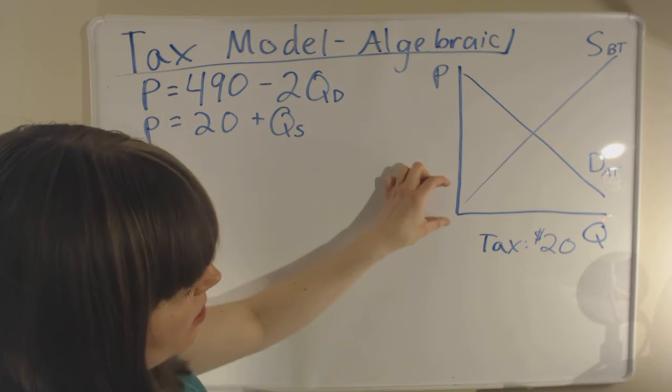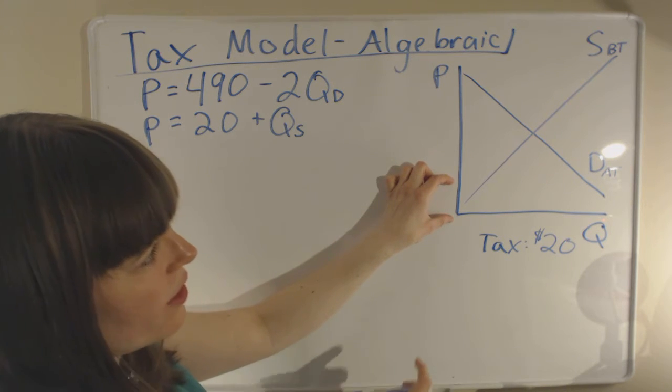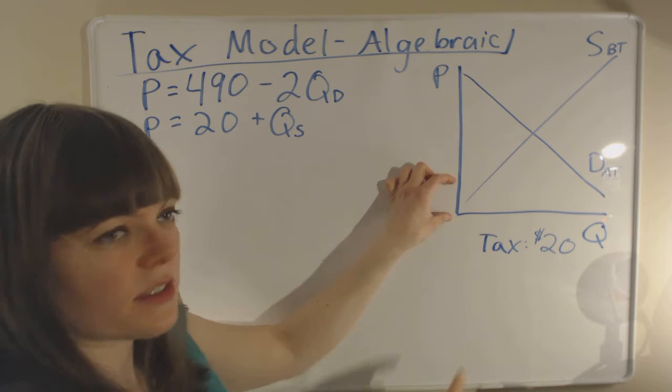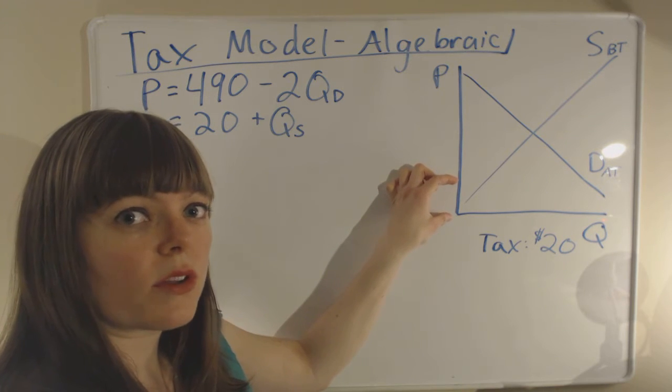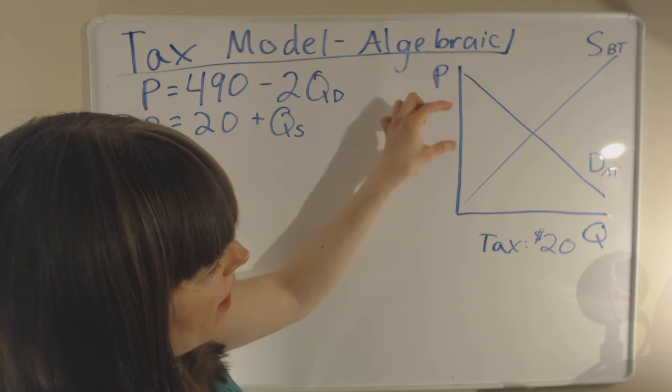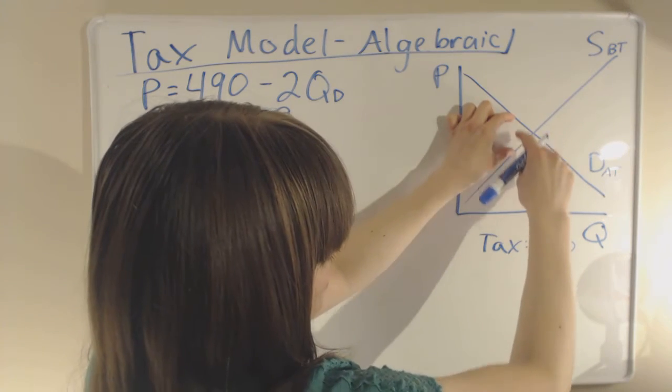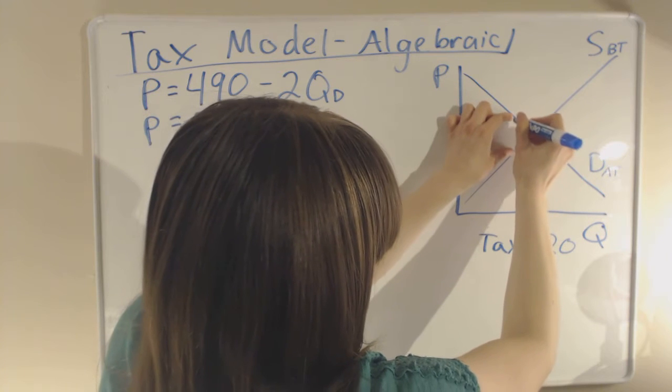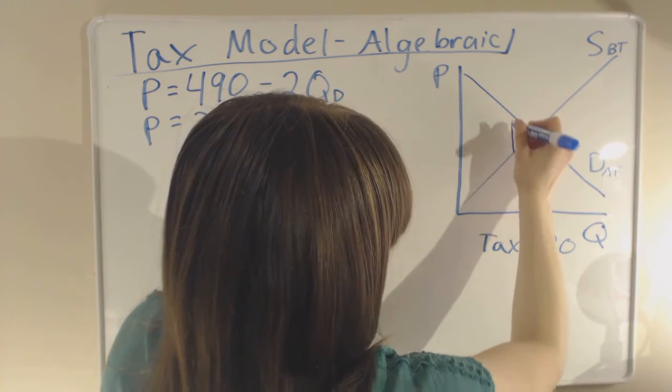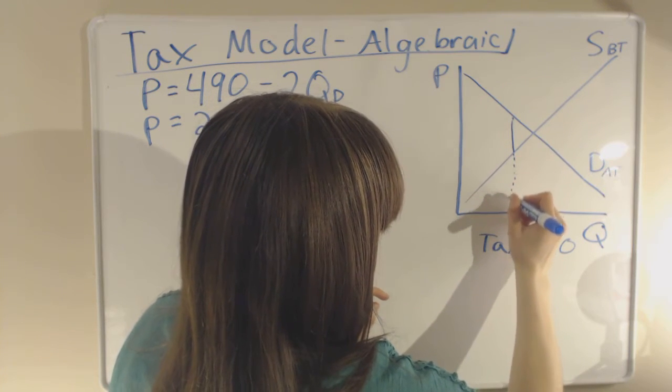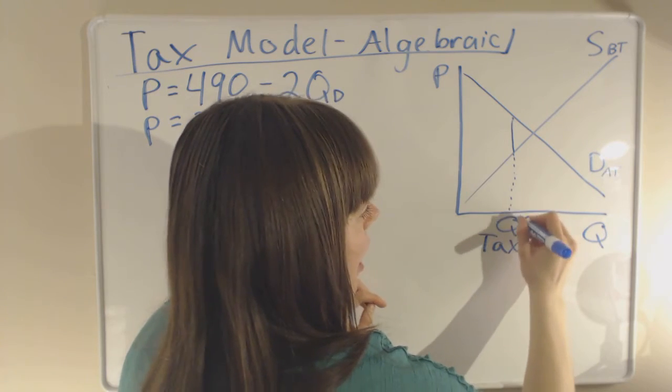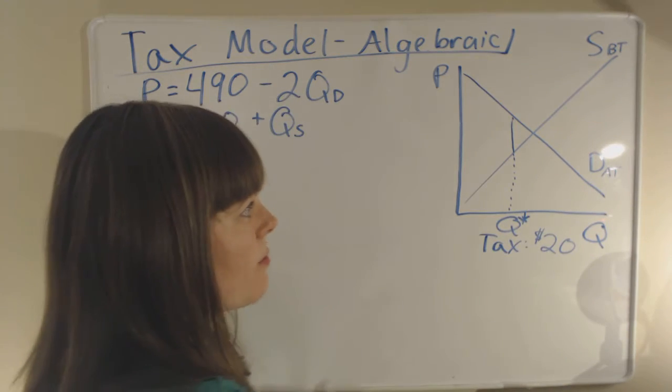So if we take that $20, we know that the difference between the demand curve and supply curve needs to be equal to exactly the tax. And we can pick up that $20 and put it exactly where the difference between the supply and demand curve is exactly $20. And where that happens, at that particular quantity, that will be the optimal quantity in this tax model.